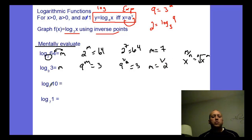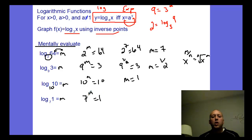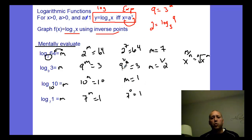This one doesn't show a base. When you don't show the base value, it's always base ten — that's the common log. So log base ten of ten: ten to the m equals ten, so m equals one. The last one: log base seven of one equals m. Seven to what power is one? Any exponent rule — anything to the zero power is one. So m equals zero. To be good at these, you have to be really good at your exponent rules. That's the area where students start to struggle — not because of the new material, but because they don't know exponent rules yet.